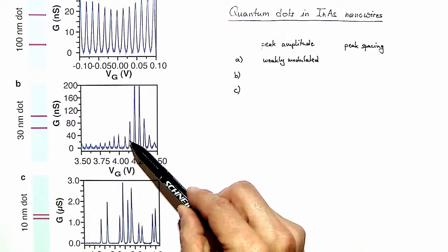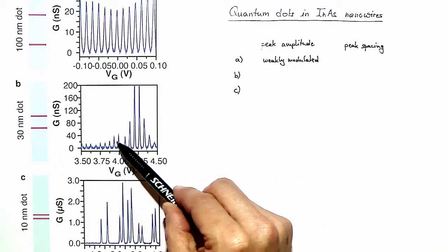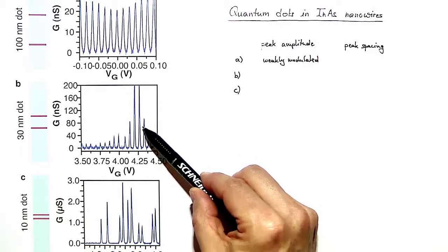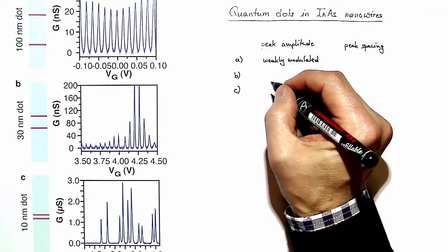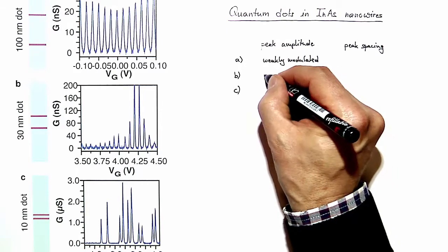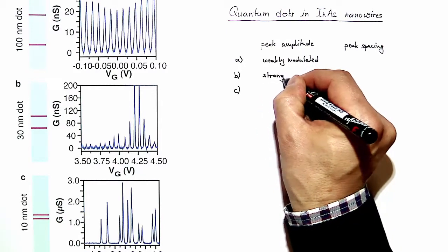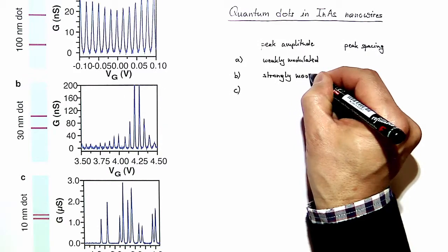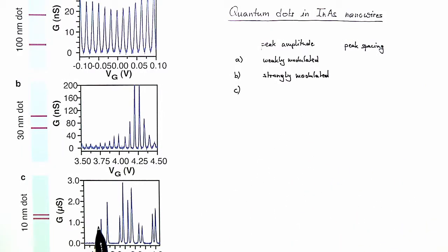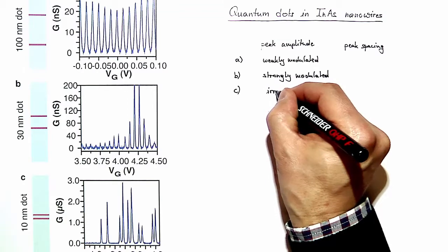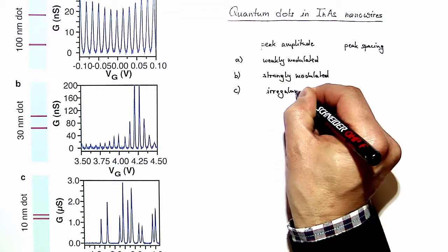In contrast, in case B there is a strong change of the amplitude, but we can still draw an envelope of the amplitudes, so we call this strongly modulated. In case C, the amplitudes seem to vary in an almost random fashion — we see increases, decreases, it goes up and down from peak to peak — so let's call this an irregular peak amplitude.